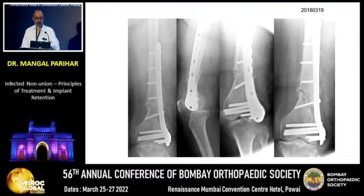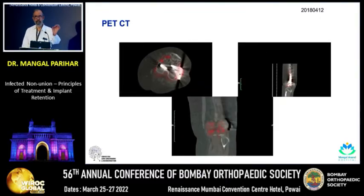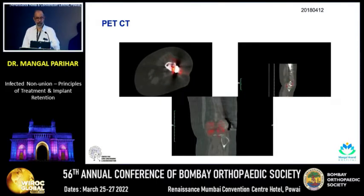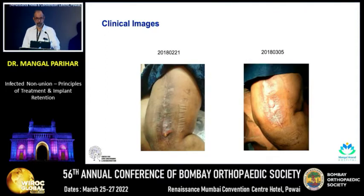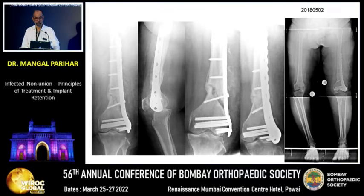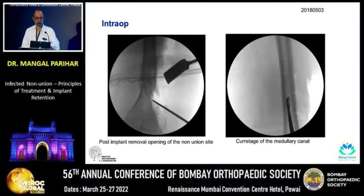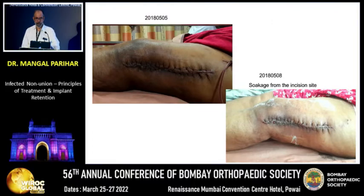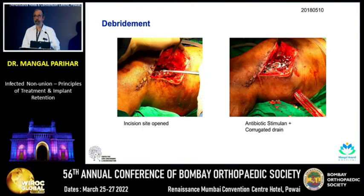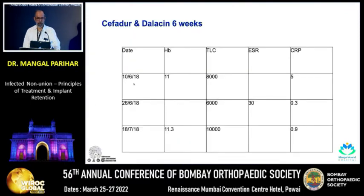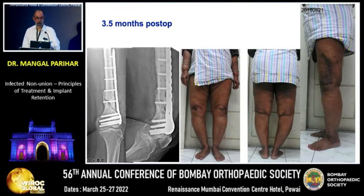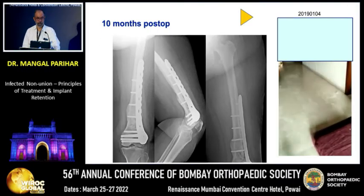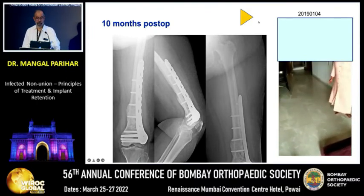A few weeks down the line, her discharge had slightly increased. We did a PET CT which showed the infection was pretty localized in relation to the plate. When she came back with the sinus, we decided to take this out, clean it up, and put internal fixation again. She had a little soakage, which had to be treated aggressively — open it, debride it. This was a new plate, not the old one, with antibiotic stimulant and a corrugated drain. Over time with antibiotics, her CRP came to normal. At three and a half months she looked good, and at 10 months she was fully healed and functional.